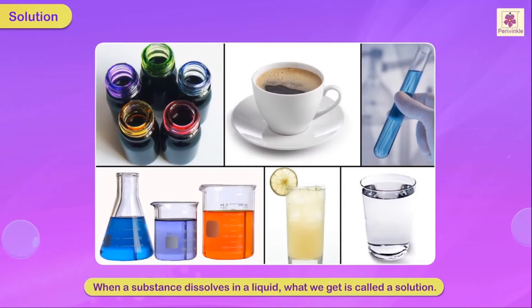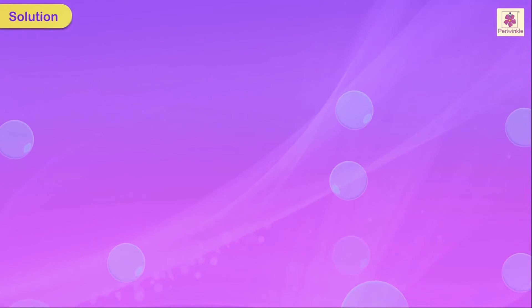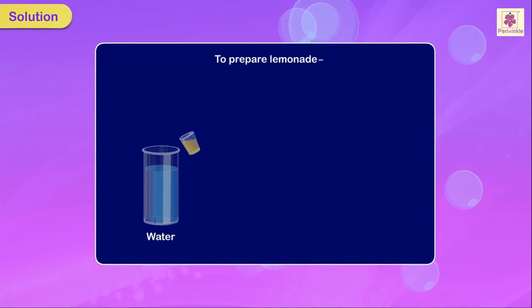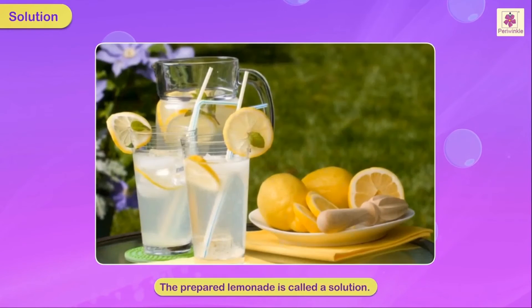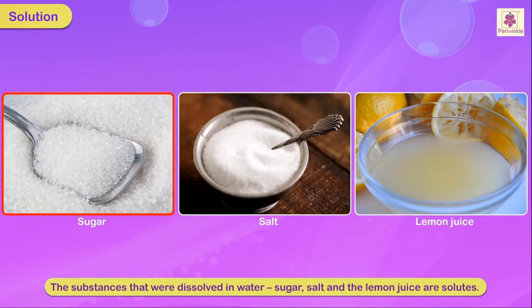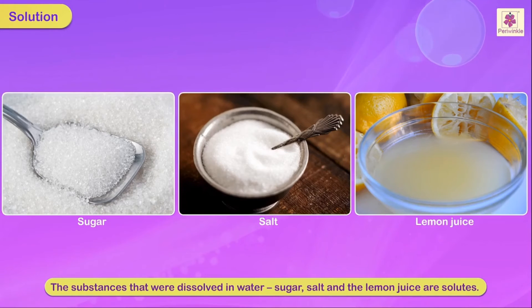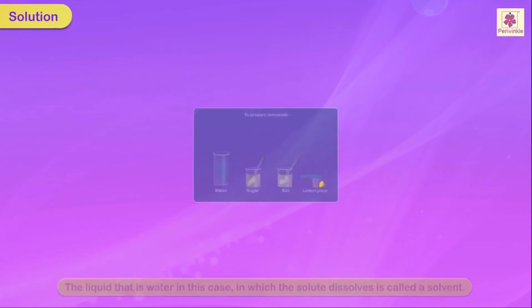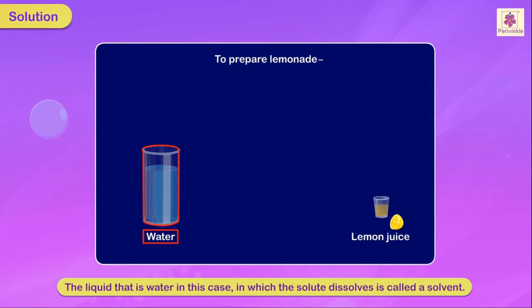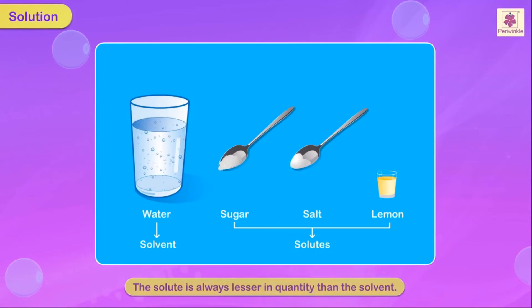When a substance dissolves in a liquid, what we get is called a solution. To prepare lemonade, we add sugar, salt, and lemon juice to the water. The prepared lemonade is called a solution, while the substances dissolved in it — sugar, salt, and lemon juice — are the solutes. The liquid, water in this case, in which the solutes dissolve is called the solvent. The solute is always lesser in quantity than the solvent.